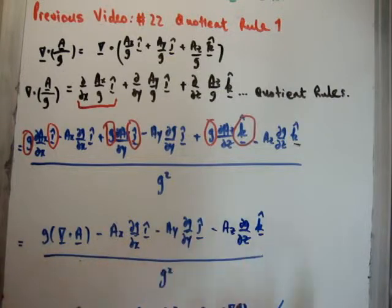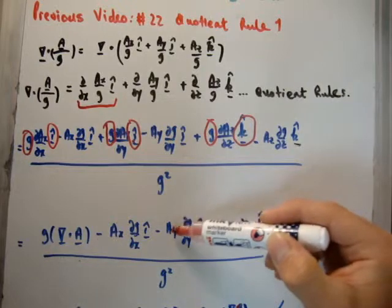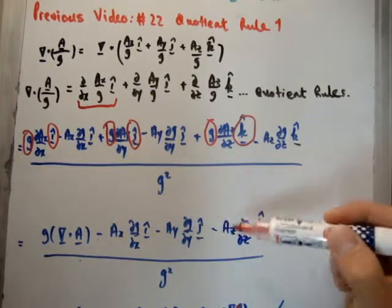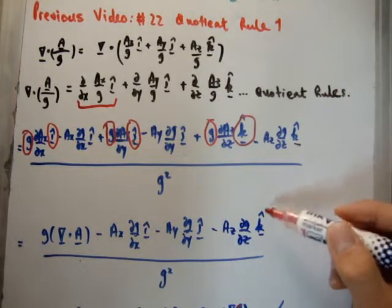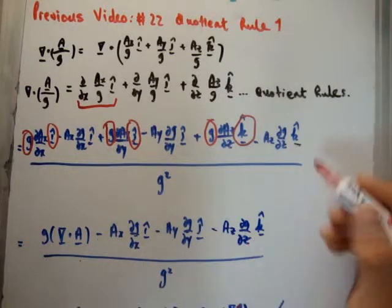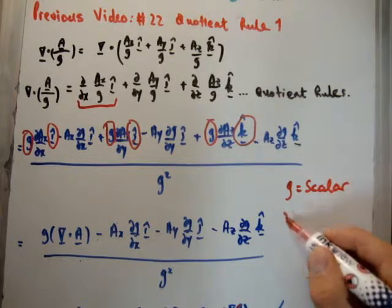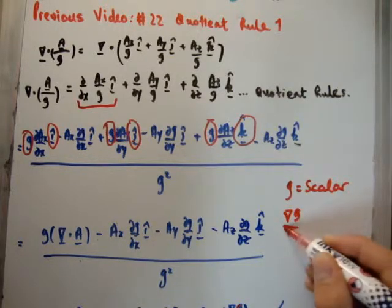And we're left with three remainder terms. Okay, and it's, of course, all divided by g-squared. Now, if we look at this, we seem to have a sub x in the i-hat direction, a sub y in the j-hat direction, and a sub z in the k-hat direction. But if we look in the middle, we have del g del x, del g del y, del g del z. g is a scalar, so what it seems that we have is, in actual fact, that we have the gradient of our scalar here.